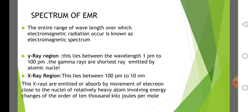Spectrum of electromagnetic radiation. The entire range of wavelengths over which electromagnetic radiation occurs is known as the electromagnetic spectrum. The first region is the gamma ray region, which lies between wavelengths of 1 picometer to 100 picometer. Gamma rays are the shortest rays, emitted by atomic nuclei.